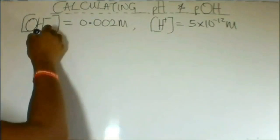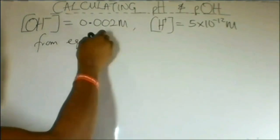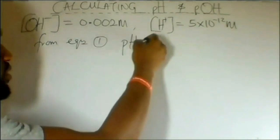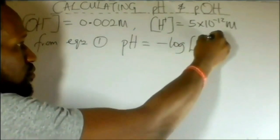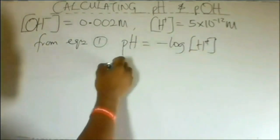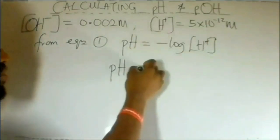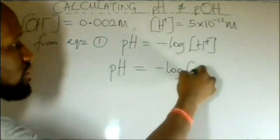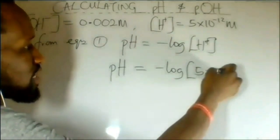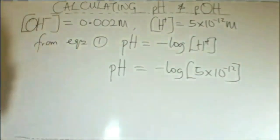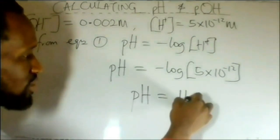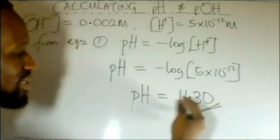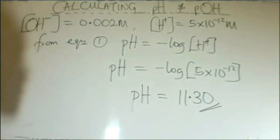From equation 1, pH equals the negative logarithm of hydrogen ion concentration. Therefore, we can calculate pH since we now have H⁺. That is, negative logarithm of 5 times 10 to the power of minus 12. This gives pH equals 11.30. This answers the third part of the question; pH equals 11.3.